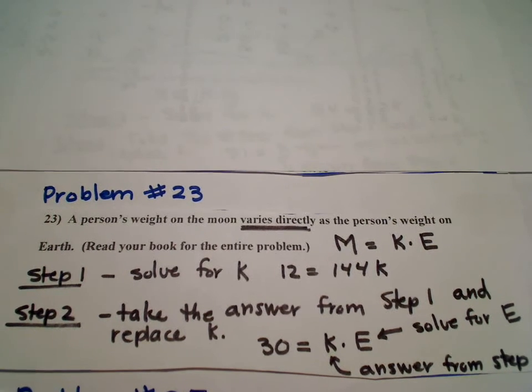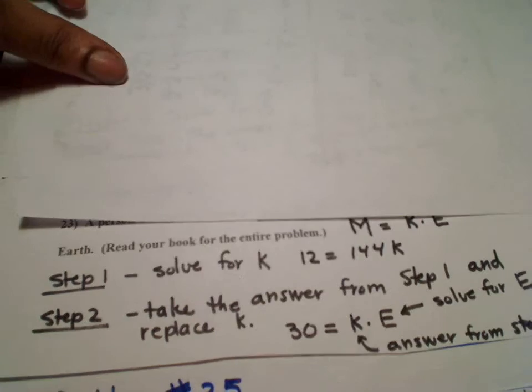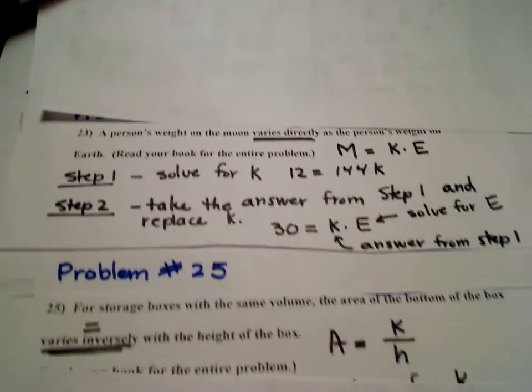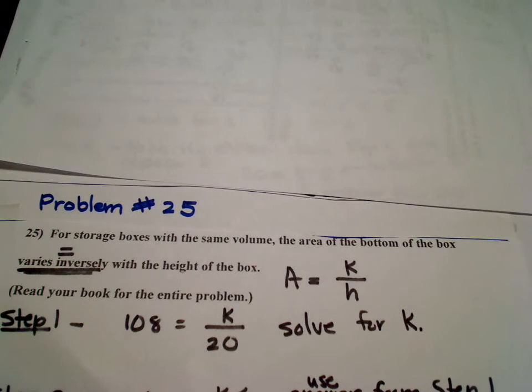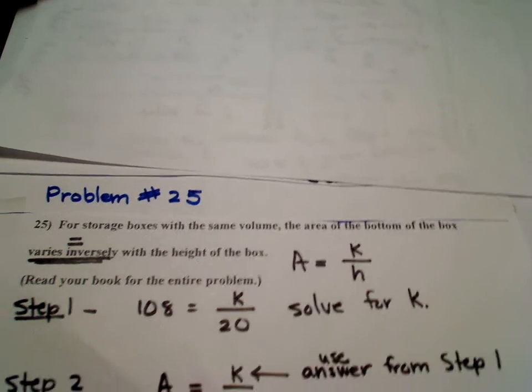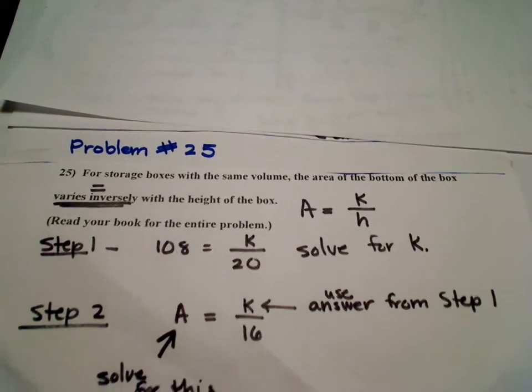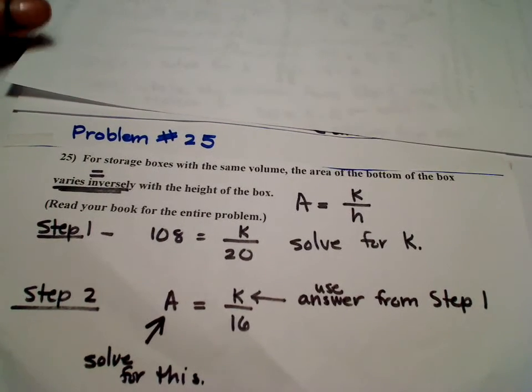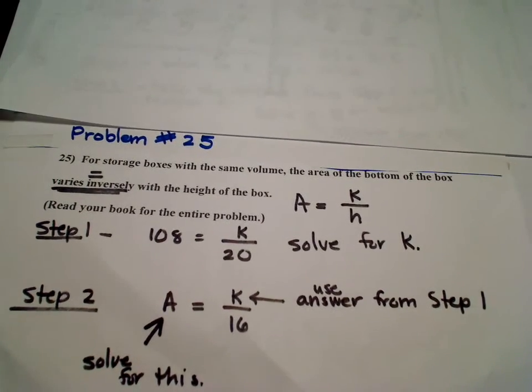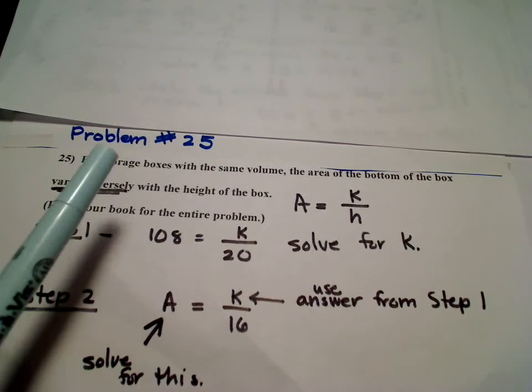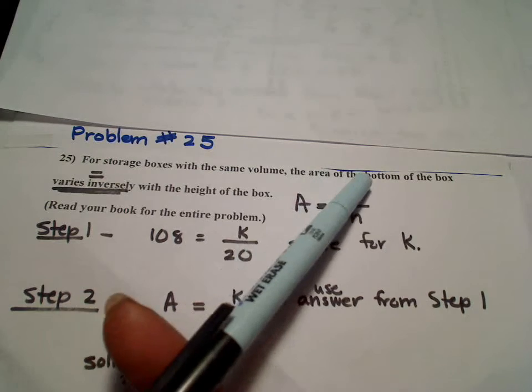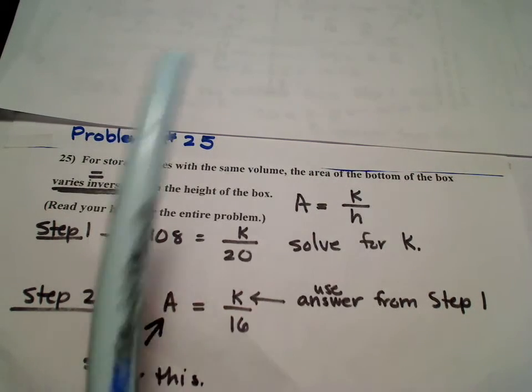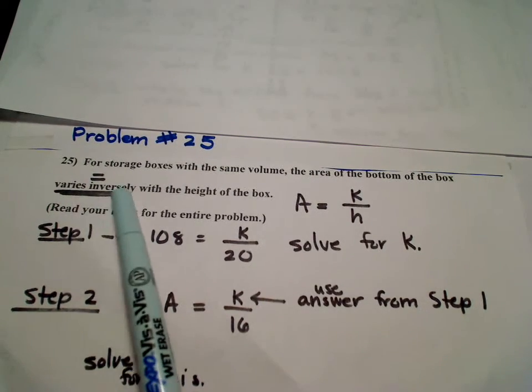And now for the last one that I've started the process for you again. It's problem number 25. So, let's look at problem number 25. Here the setup is very similar. Once again, we're talking about storage boxes with the same volume. The area of the bottom of the box varies inversely.